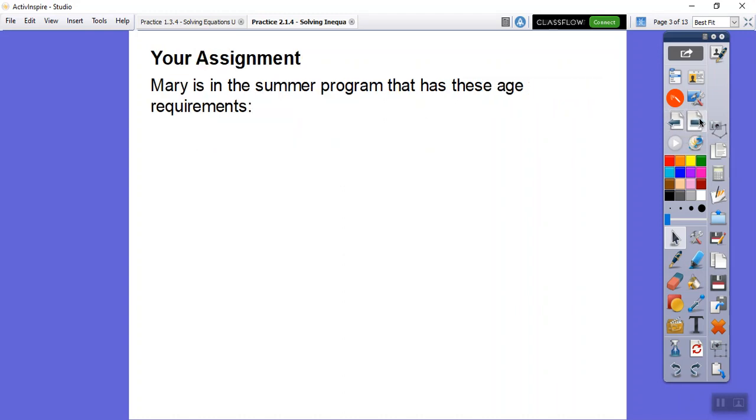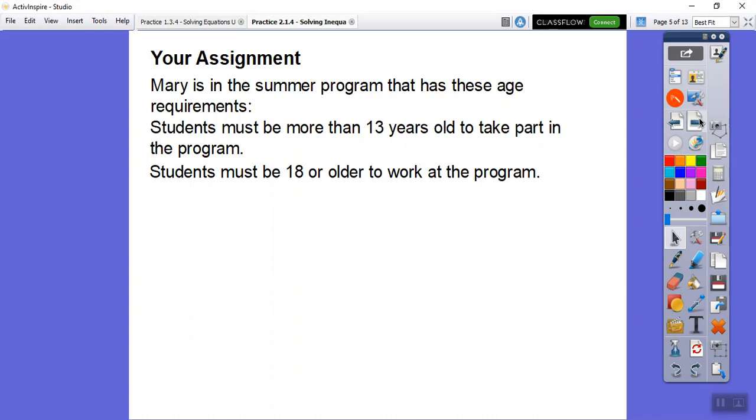Mary is in the summer program that has these age requirements. The first one is students must be more than 13 years old to take part in this program. So more than 13 - if you're 13 and then the next day you're more than 13, but you want whole numbers like 14, 15, 16, 17, 18, 19. So more than 13 means 14 or older in the context of this problem.